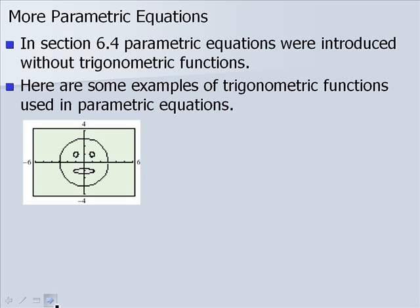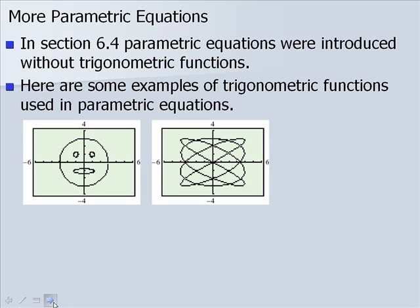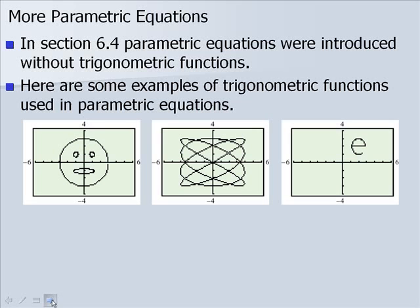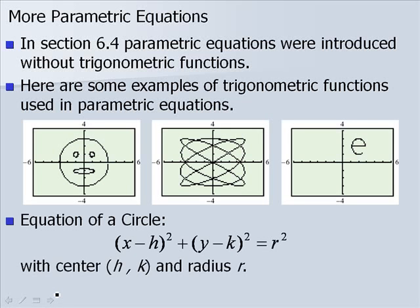They can make a face, a cool shape, or letters. You'll need to recall the equation of a circle given as x minus h quantity squared plus y minus k quantity squared equals r squared, where the center is the point h, k and the radius is r.